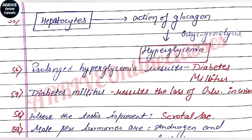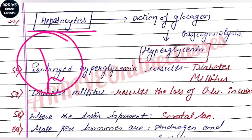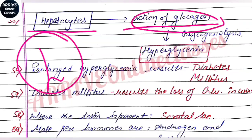Next: hepatocytes — the word 'hepatic' is related to the liver, so the cells of the liver are called hepatocytes. When glucagon acts, it stimulates the process of glycogenolysis, which raises the blood sugar level.